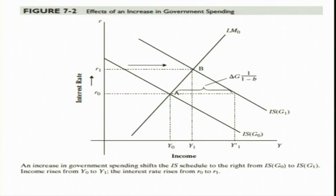So look at this — this is the government expenditure multiplier, the fiscal policy multiplier. When there is an increase in government expenditure the IS curve shifts from left to right, and the new equilibrium position at the intersection of the IS curve and LM curve is at this point. As per the simple Keynesian model without the money market, the increase in government expenditure would result in an increase in GDP from Y-naught to Y-epsilon-1.